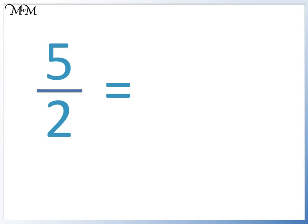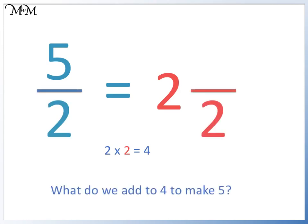Let's convert 5 halves into a mixed fraction. We ask, how many times does 2 go into 5? 2 2's are 4, so it goes in twice. Our answer is also in halves. What do we add to 4 to make 5? 4 plus 1 more is 5. So we have 1 more half. 5 out of 2 is the same as 2 and 1 half.